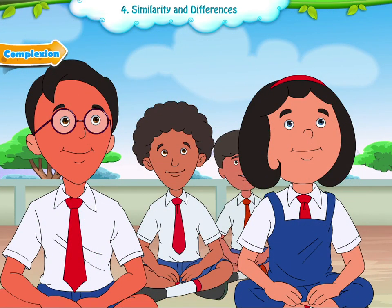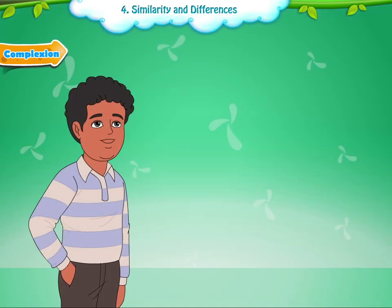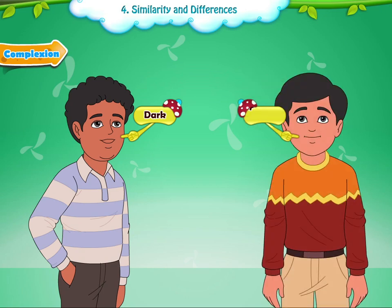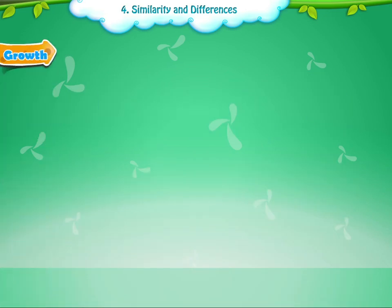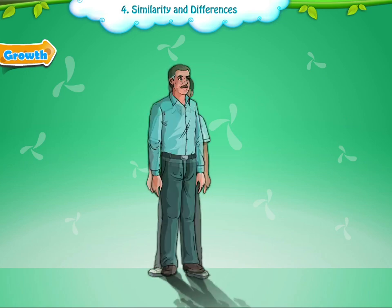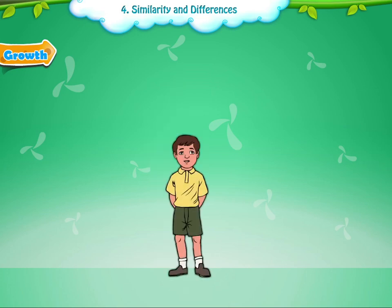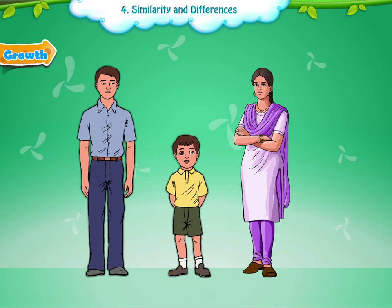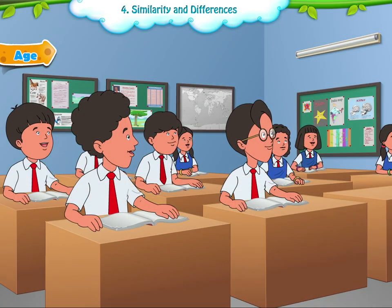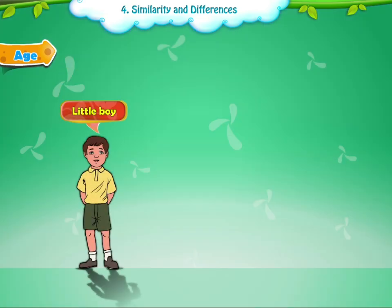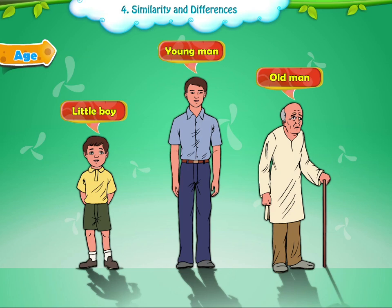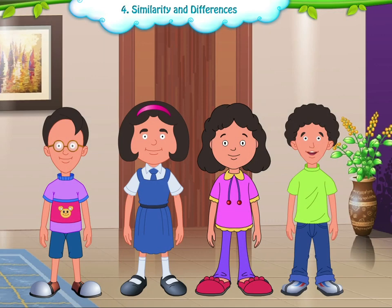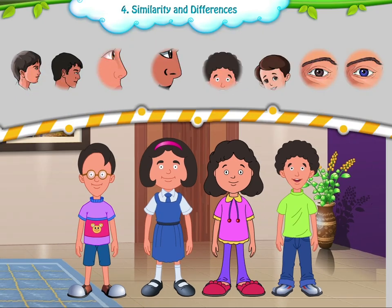Complexion. All of us have different skin complexion. Some people have dark complexion and some are fair. Growth. As we grow up, our body keeps growing as well. So children like you look small, while a young man or a woman looks much bigger. Age. We look different according to our age. A little boy, a young man, and an old man look very different from each other. Remember, we all look different from one another, though we have the same parts of the body.